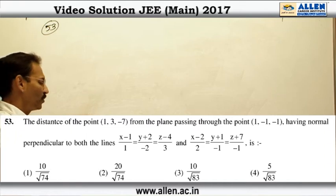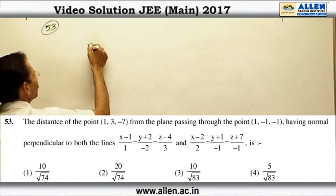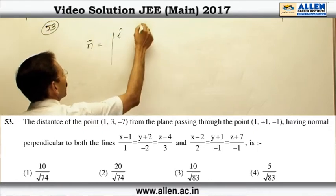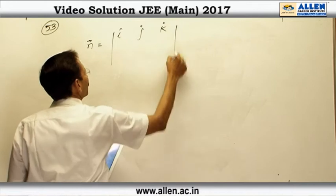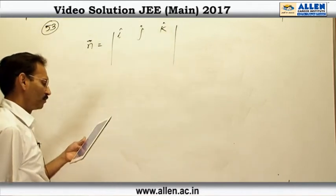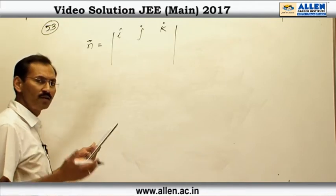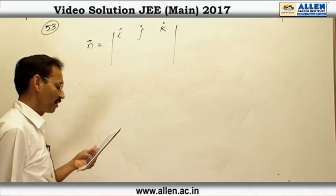Question number 53, a routine problem of 3-dimensional geometry. We have to find the plane, and for finding the plane you have to find a normal vector. The direction ratios of two lines which are parallel to the plane are given to us.